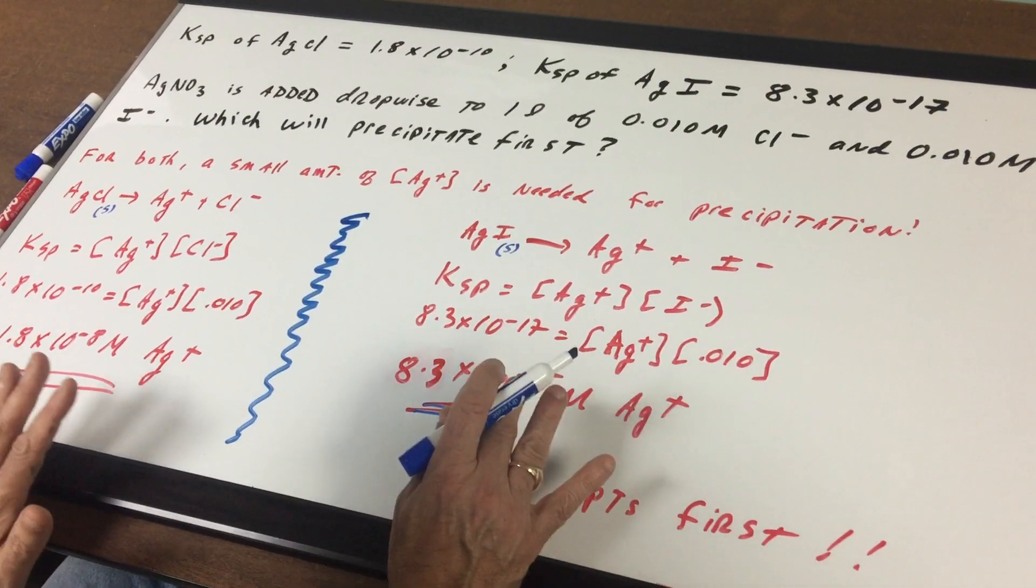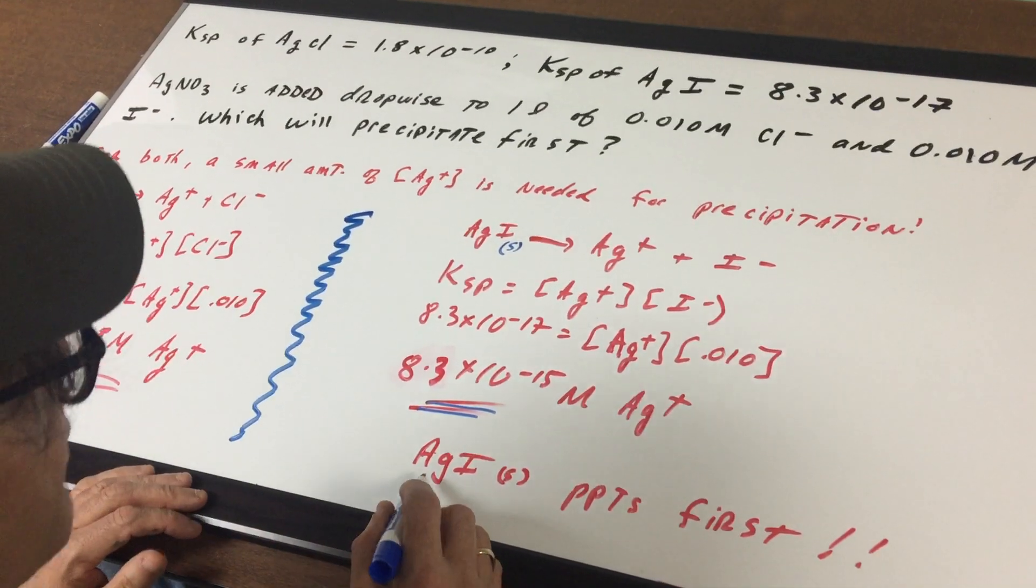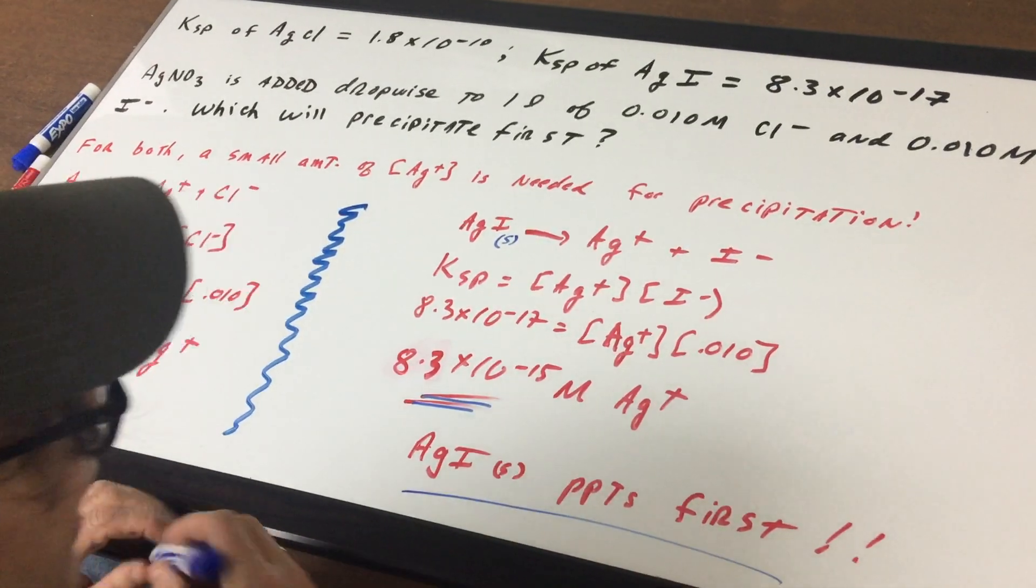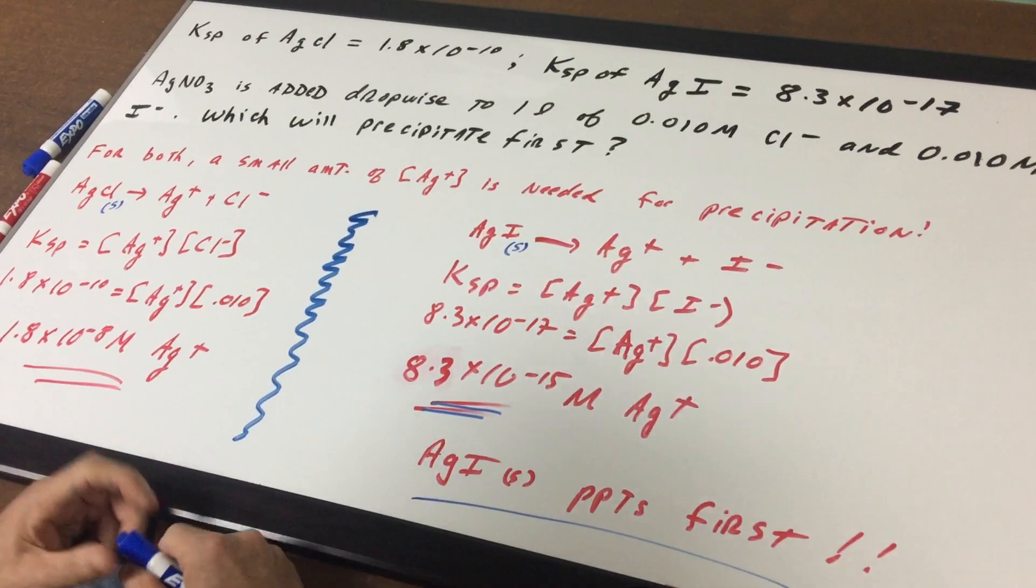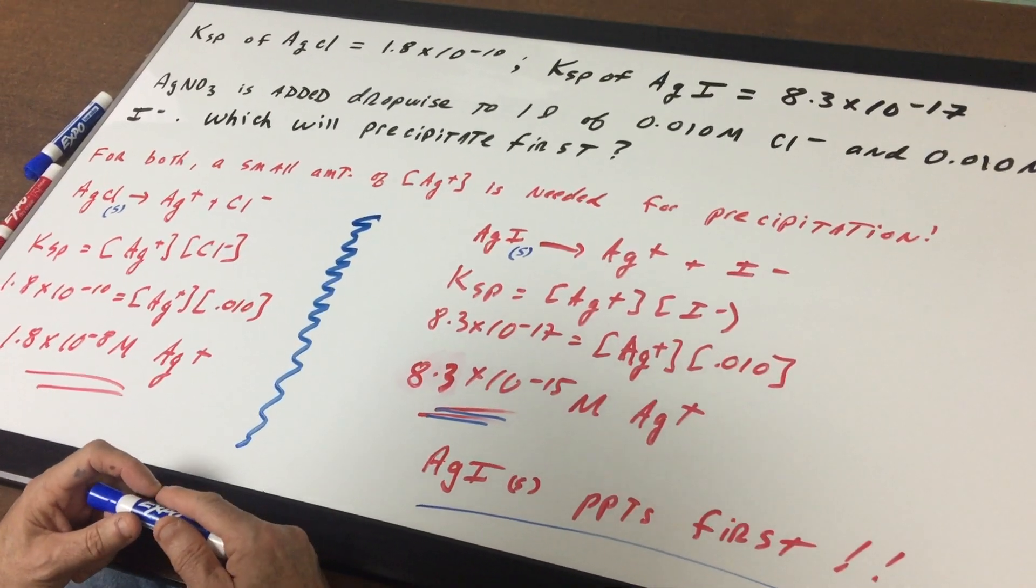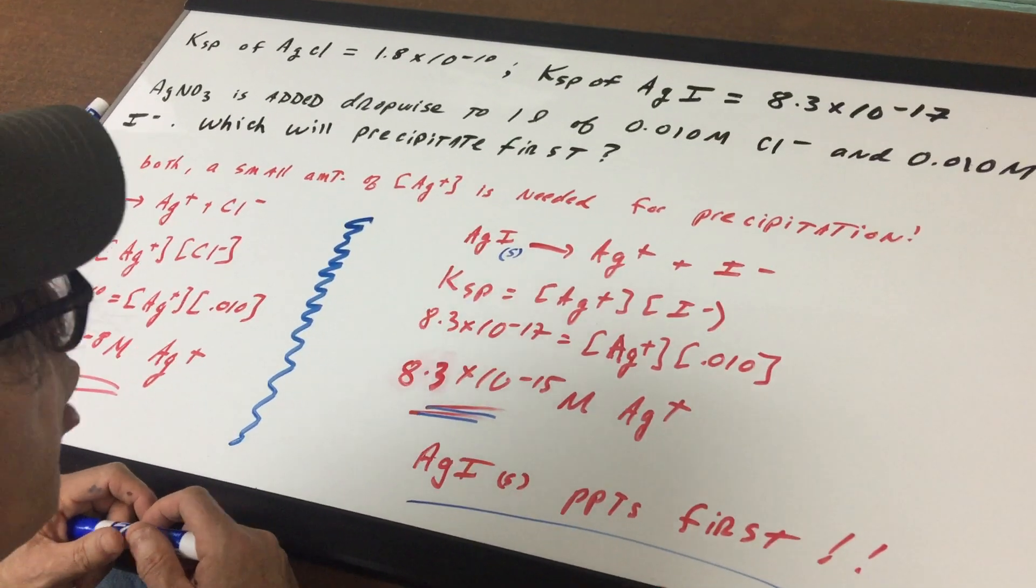So the smaller amount of silver would give you the first precipitate, and I hope you can see that would be silver iodide, which precipitates first. Very important question for the DAT. Make sure you can do KSP.